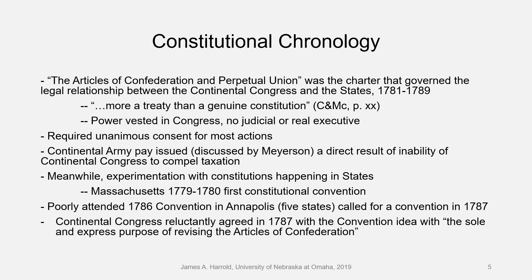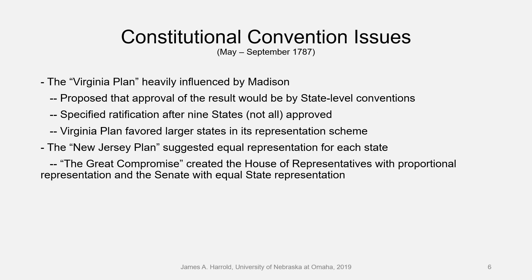So in 1787, the Continental Congress agreed with the idea that there should be a convention to revise the Articles of Confederation. Well, they went way beyond that. In the summer of 1787, the Constitution was written — that's the short story — but it's informed by all these tensions I keep talking about.